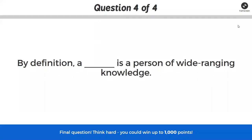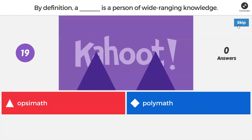By definition, a blank is a person of wide-ranging knowledge. And so this deviated somewhat from the definition of opsimath. So for me, this means it can't be opsimath. And so it has to be this other word, polymath. So we've begun introducing a new word, polymath.